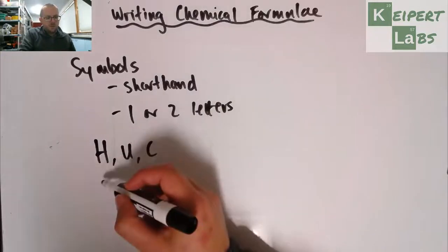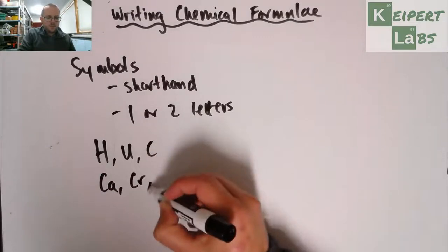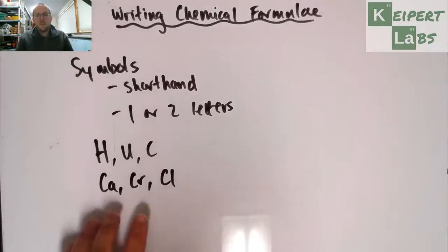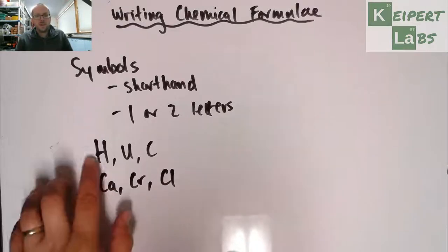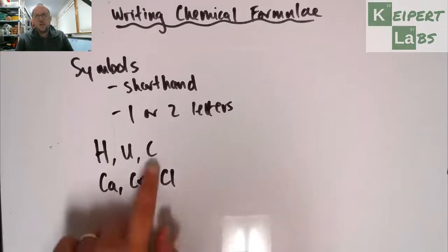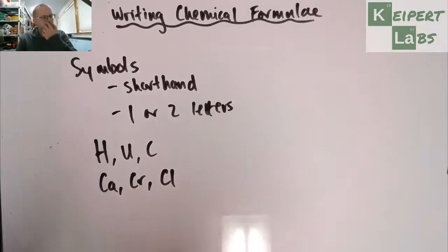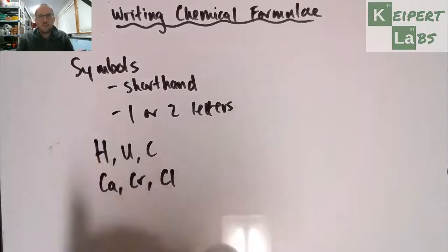And then we get other ones where we have two letters. So we get one uppercase letter and one lowercase letter. And the reason that we would have those is because we have 118 elements, but we've only got 26 letters of the alphabet. And so if we're just going to use single letters, we're going to run out pretty quickly. And so we will often have elements that start with the same letter in their name. But we need to be able to distinguish calcium, chromium, chlorine, carbon, cobalt, copper, all of these ones that start with C. In the same way we need to distinguish arsenic from arsine from argon and bromine from beryllium from barium.